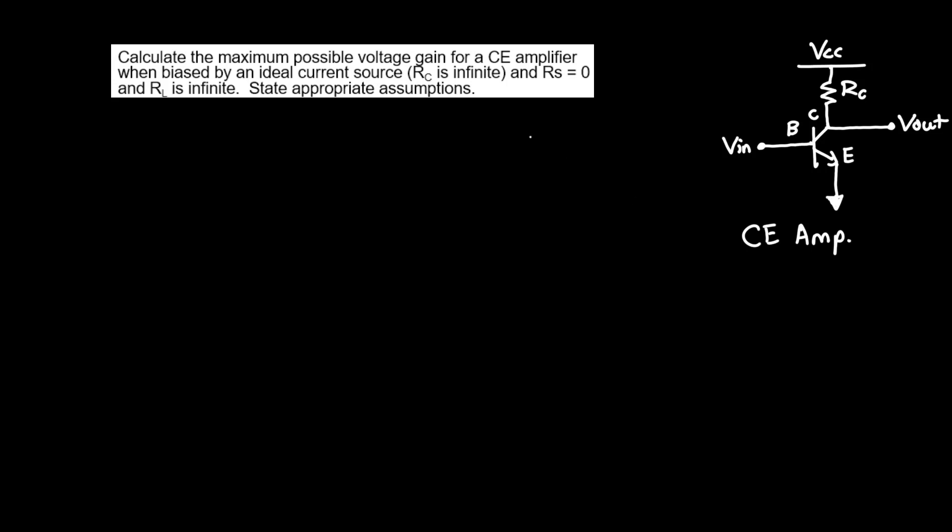So basically what this is saying is that I provided a common emitter amplifier, your run of the mill one that you usually see up in the top right corner here. We see that RC is infinite, so technically this resistor is going to be open because no current can be going through it. That is a basic property of an ideal current source.